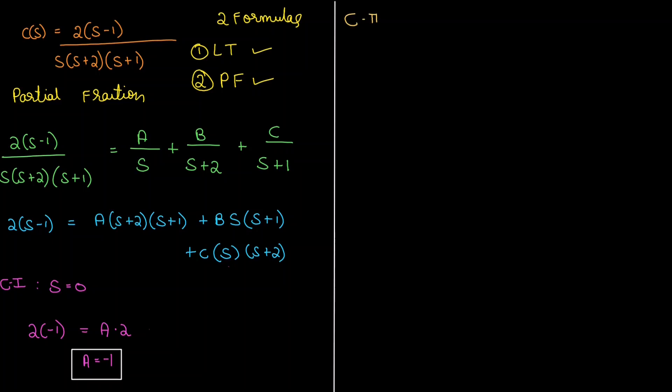Case 2: putting s equals minus 2. We will have 2 times minus 3, and putting s equals minus 2 in the other terms will bring us 0. So we consider coefficients of A and C as 0, and B will be minus 2 times minus 1. On cancelling 2 from both sides, B equals minus 3.